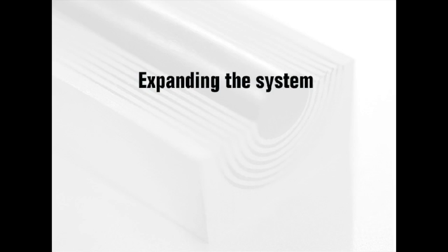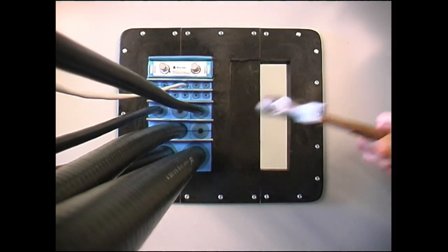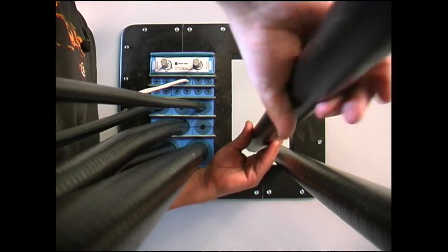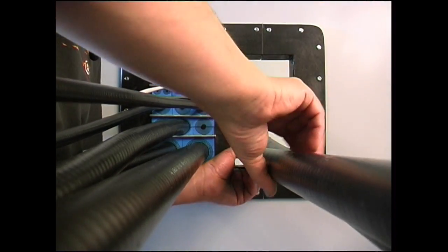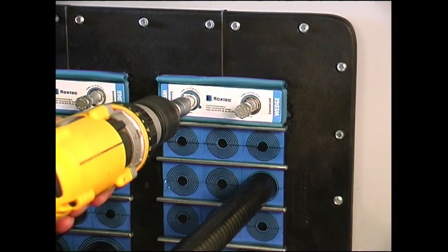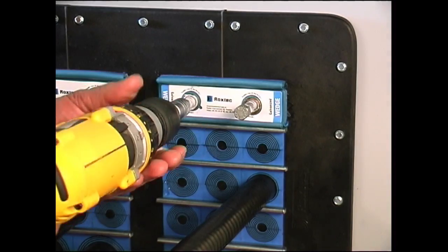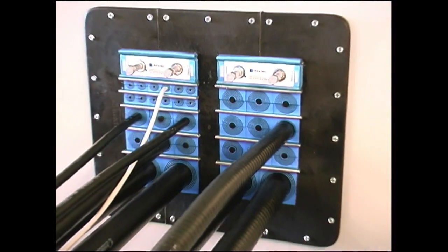Expanding the system. The Roxtec Complus frame offers a unique possibility to include spare capacity in the sealing system. To utilize that spare capacity, knock out the protective cover with any tool. Fill the frame with cables and lubricated modules as previously shown. Secure the installation with the Roxtec wedge.